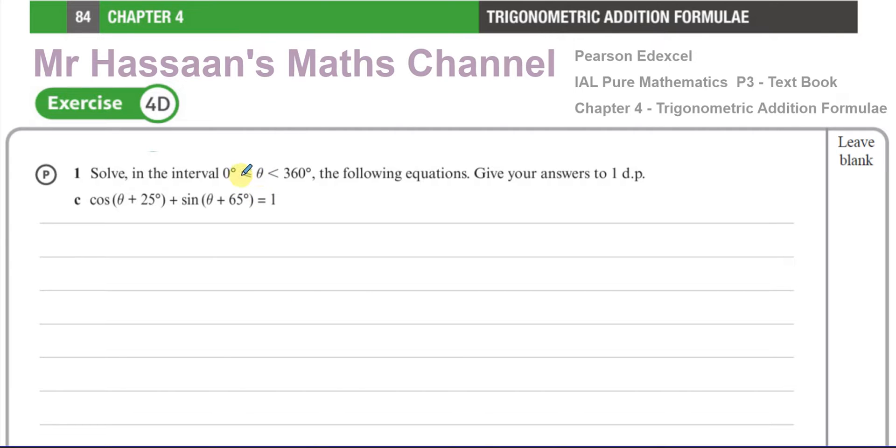We are asked to solve in the interval between 0 and 360 degrees the following equation, giving answers to one decimal place. We have these compound angles: cos(θ + 25°) + sin(θ + 65°) = 1.